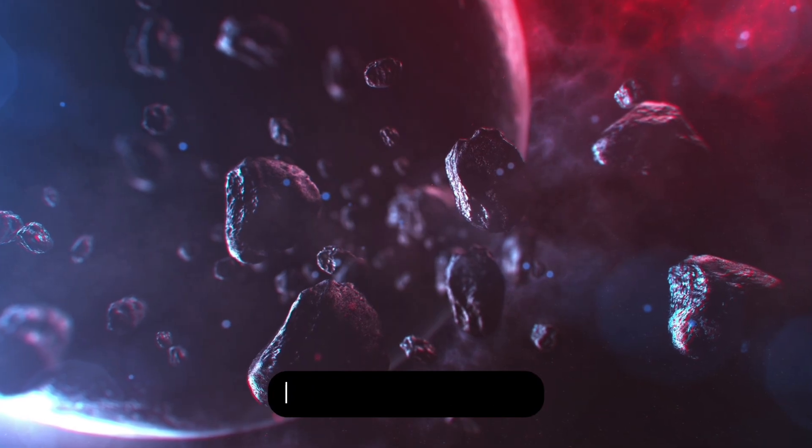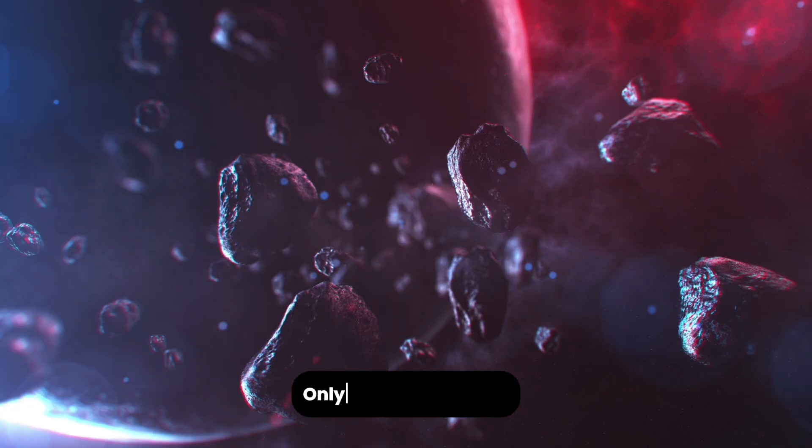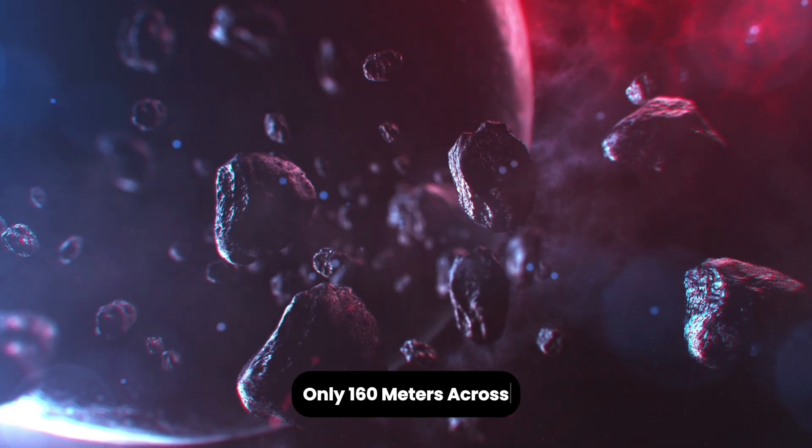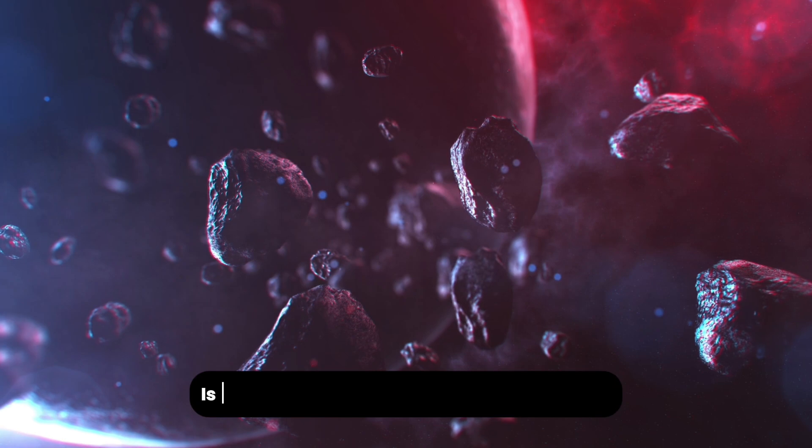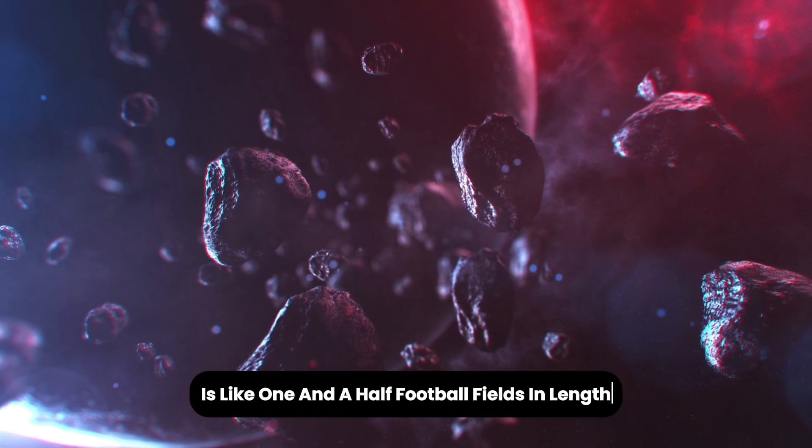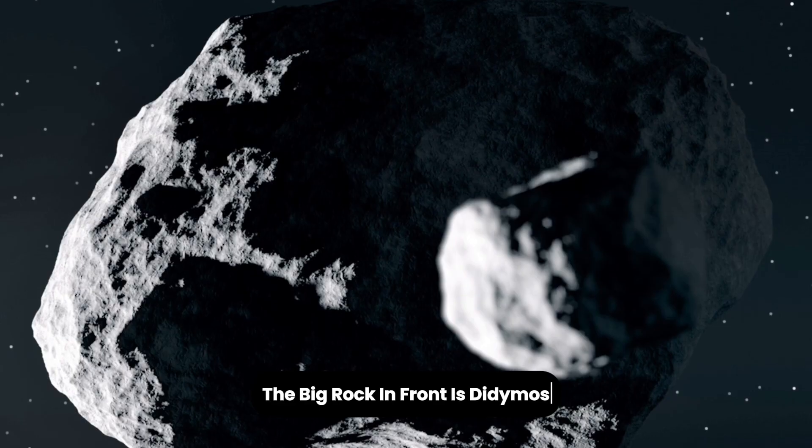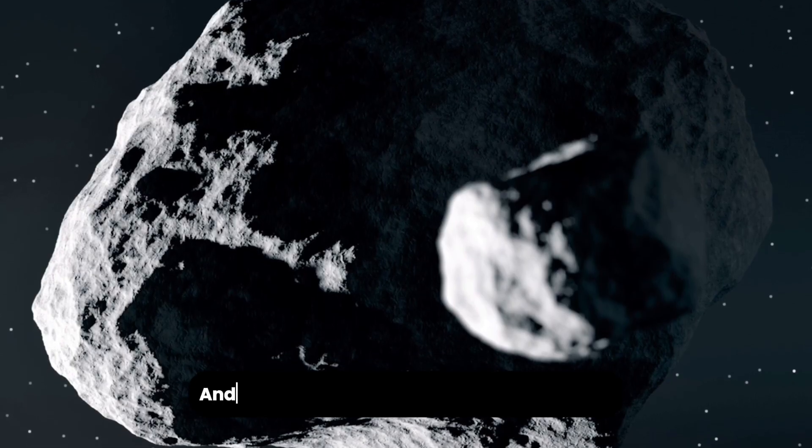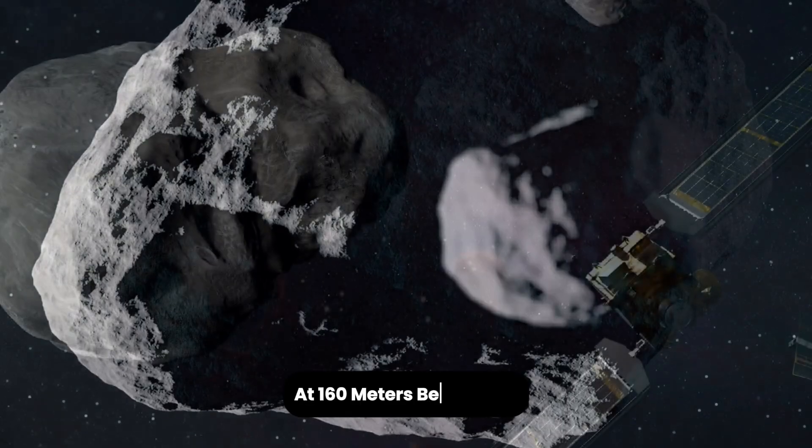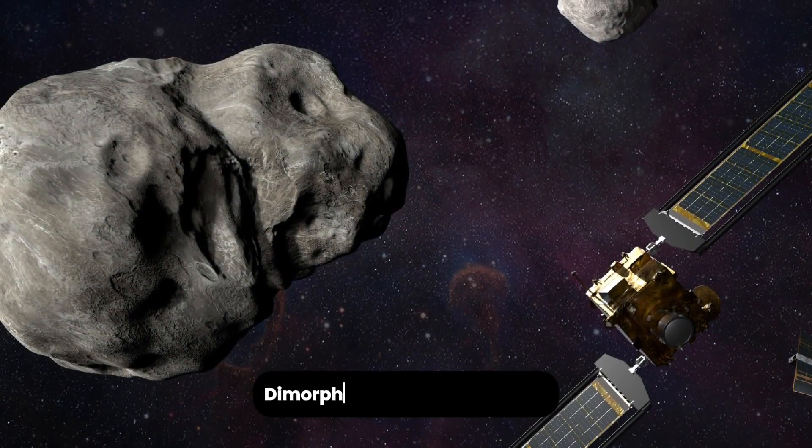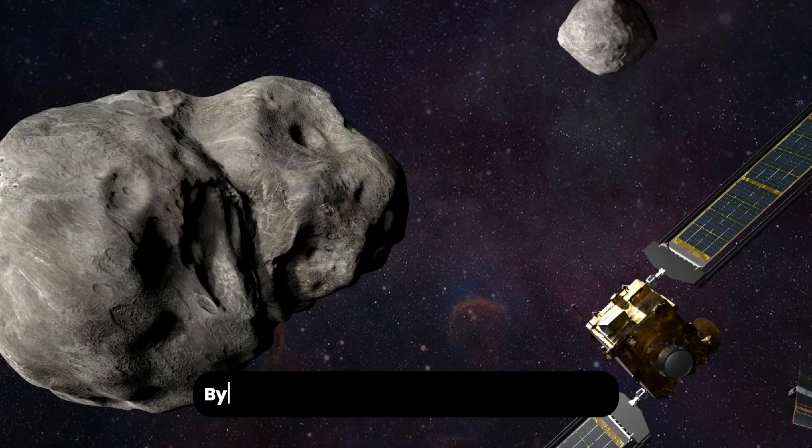Didymos is the larger body, about half a kilometer wide, and Dimorphos its small moon, only 160 meters across. To put that in perspective, 160 meters is like one and a half football fields in length. As NASA's diagrams illustrate, the big rock in front is Didymos, 780 meters across, and the tiny dot in the distance is Dimorphos, that 160 meters. Before DART, Dimorphos orbited Didymos once every 11 hours and 55 minutes. By hitting it, DART aimed to shorten that orbit.